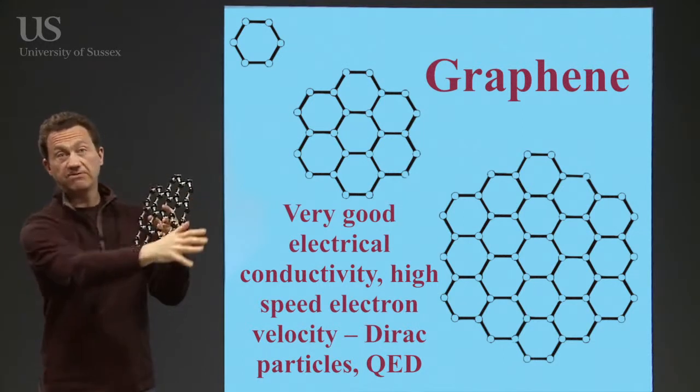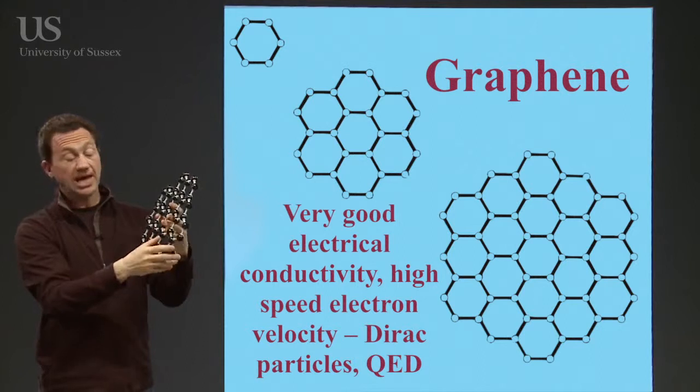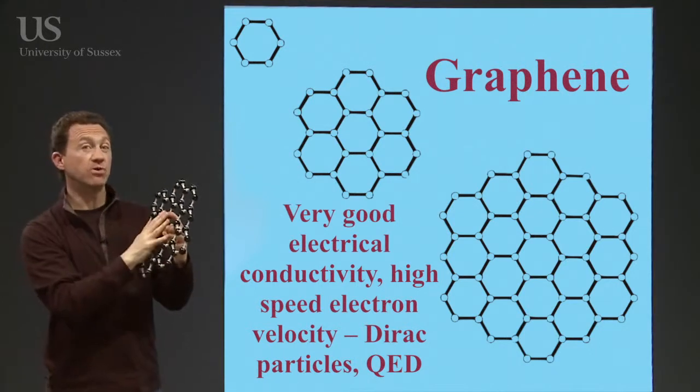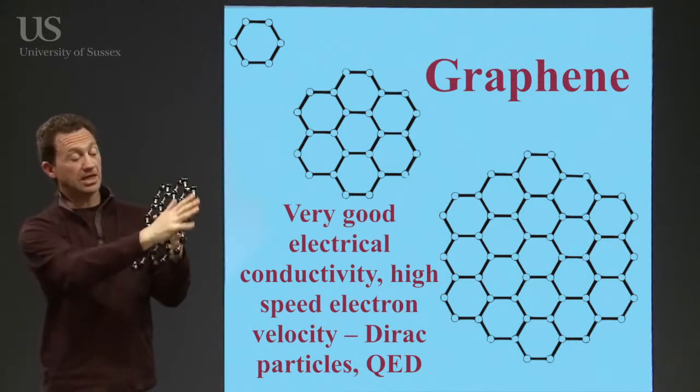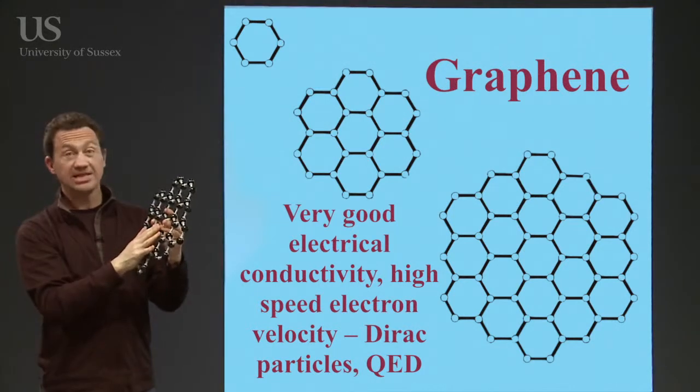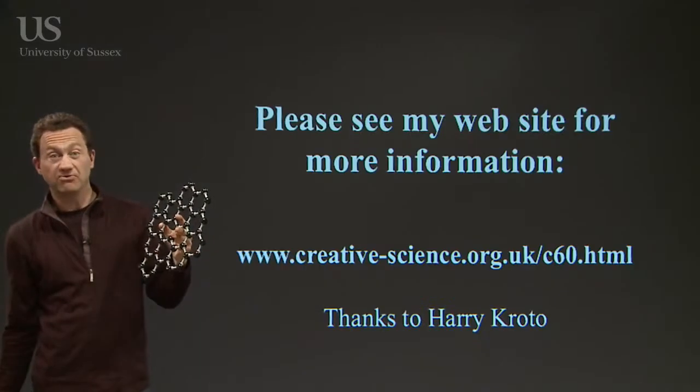And because of all the excitement of the chemistry and the physics of this new material, and actually being able to make it and predict the properties, the Nobel Prize for Physics was given to a group of scientists in 2010 for the development of graphene. If you want to know more information, check out my website.